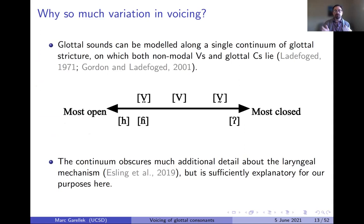On the left of the continuum we have the most open glottis; on the right, the most closed. At the extremes we have H and voiceless glottal stop. Moving towards the middle, we have non-modal vowels — breathy and creaky vowels — as well as the voiced H, which is assumed to be the same as breathy vowels in terms of glottal opening. In the middle of the continuum are modal vowels.